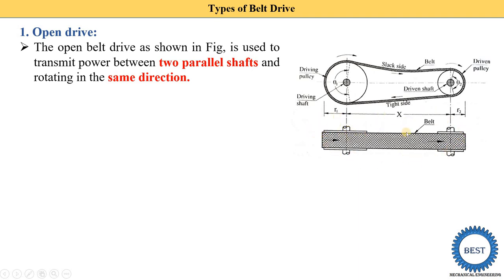Here you see: this is the driving pulley, this is the belt, this is the driven pulley. The center distance between the driving pulley and driven pulley is X. R1 is the radius of the driving pulley, R2 is the radius of the driven pulley. This is the tight side and this is the slack side.